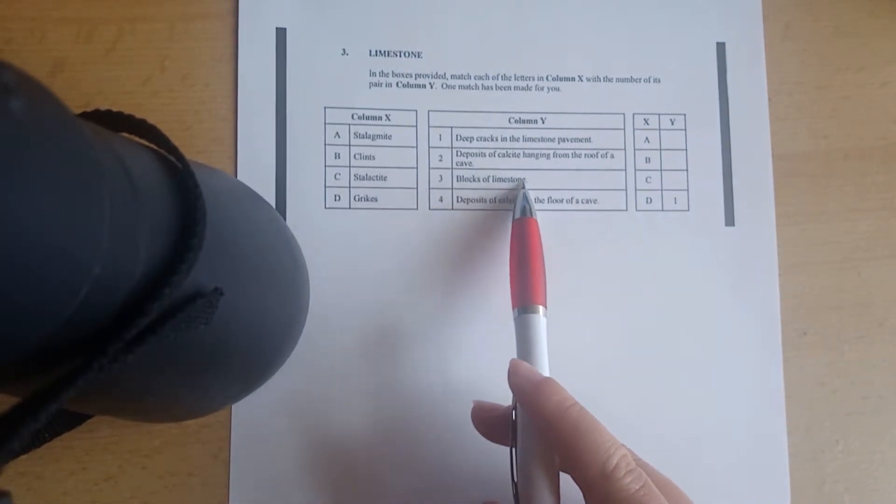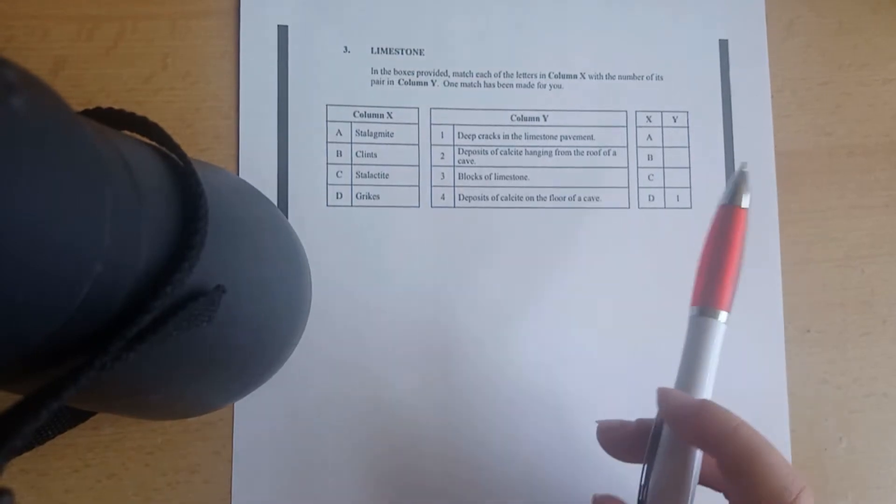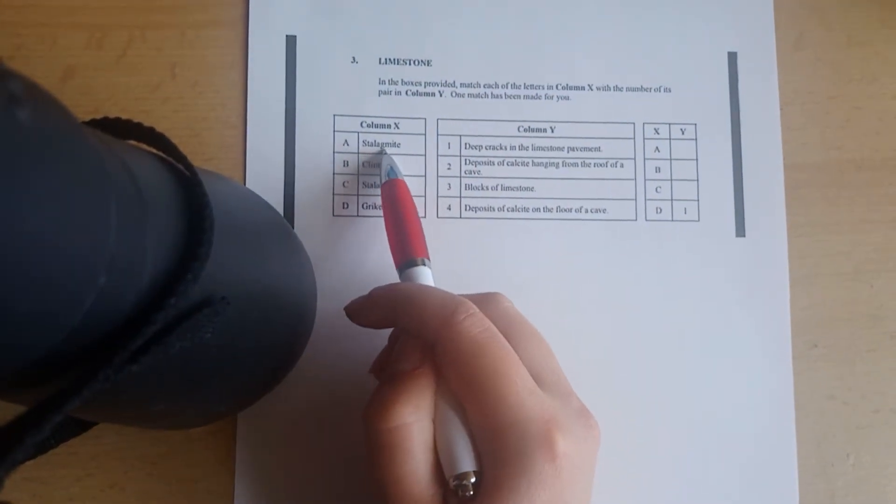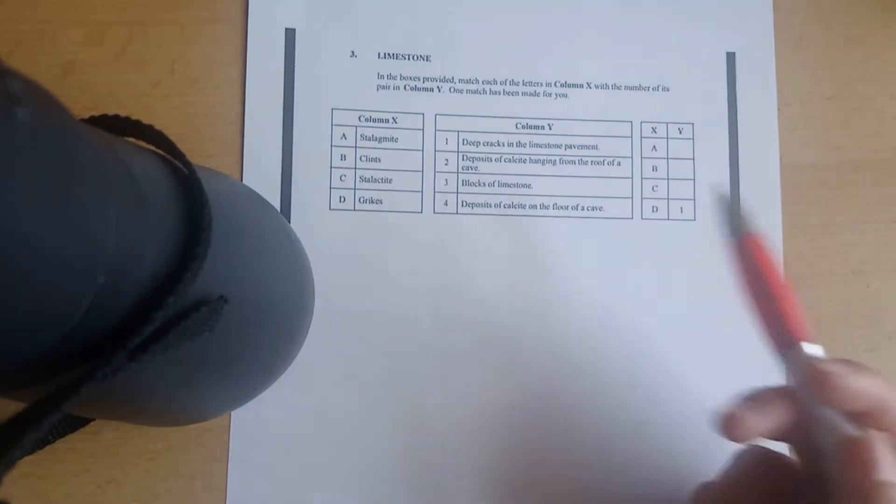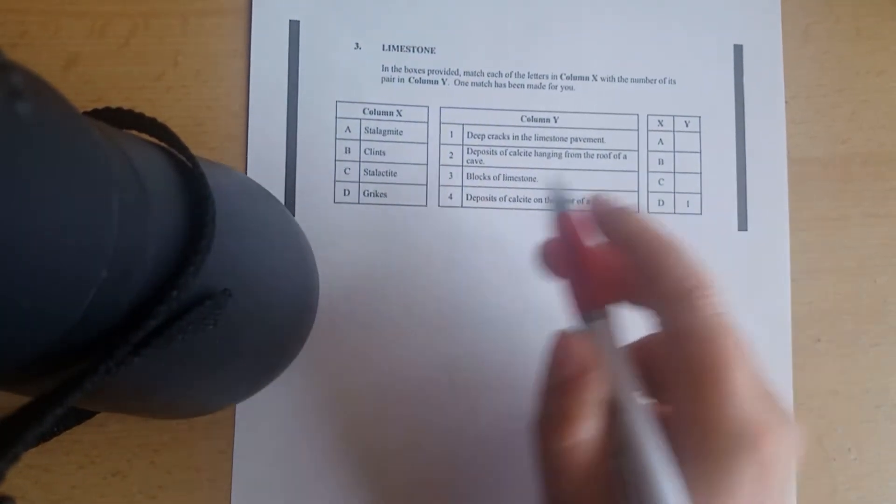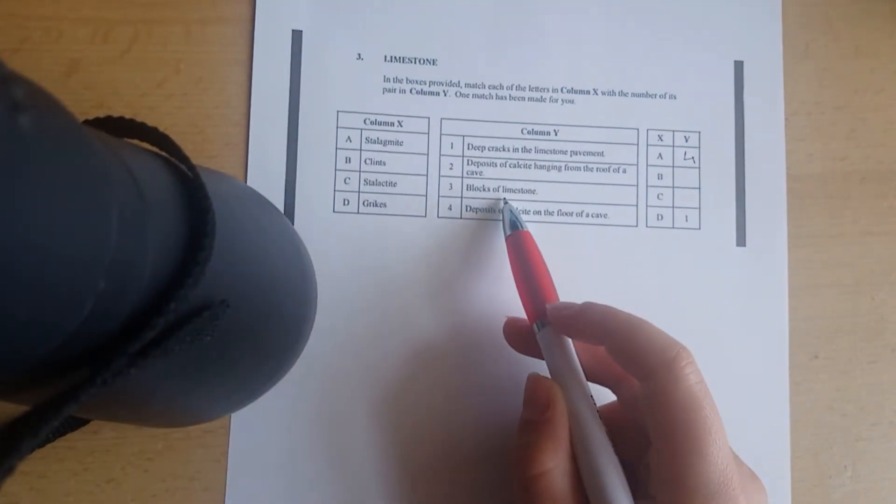Remember G in stalagmite for ground—deposits of calcite on the ground of a cave basically. So A goes with four. Clints are blocks of limestone, so it's the opposite of grikes which are the cracks separating these blocks.